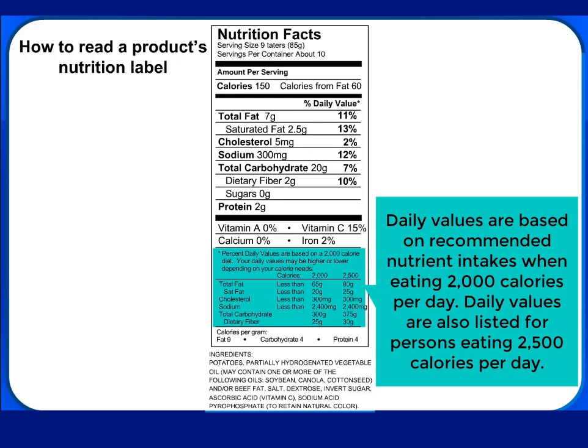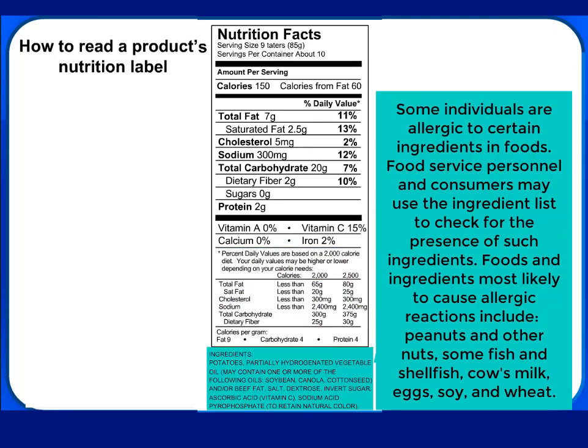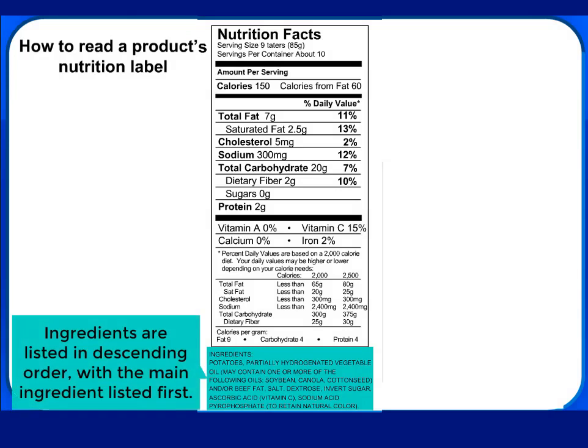Daily values are based on recommended nutrient intakes when eating 2,000 calories per day. Daily values are also listed for persons eating 2,500 calories per day. Some individuals are allergic to certain ingredients in foods. Food service personnel and consumers may use the ingredient list to check for the presence of such ingredients. Foods and ingredients most likely to cause allergic reactions include peanuts and other nuts, some fish and shellfish, cow's milk, eggs, soy, and wheat. Ingredients are listed in descending order, with the main ingredient listed first.